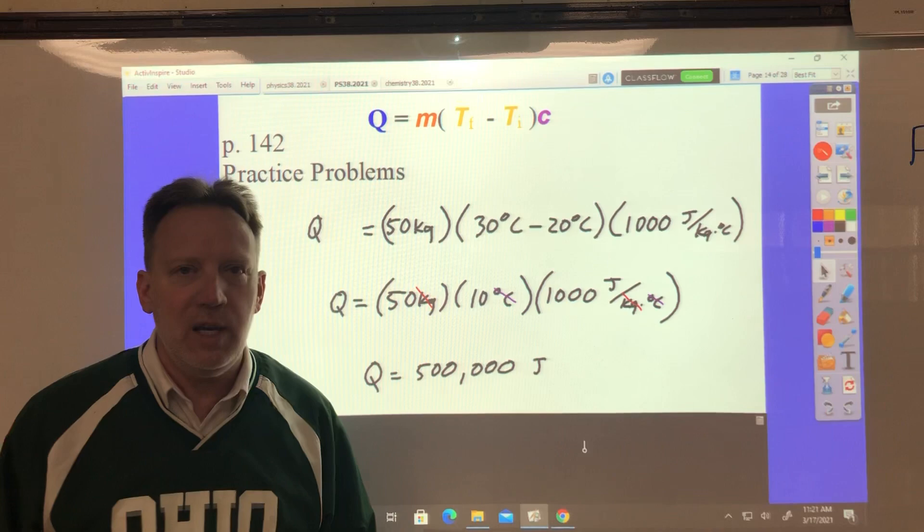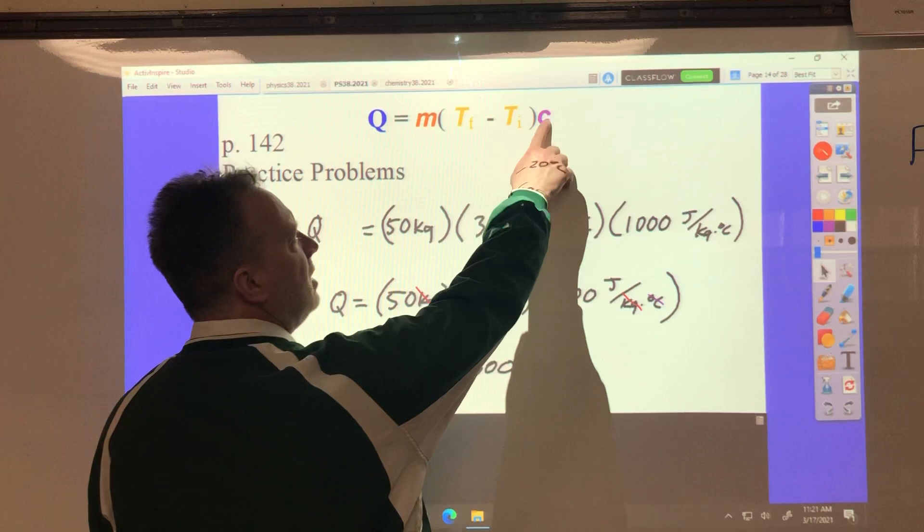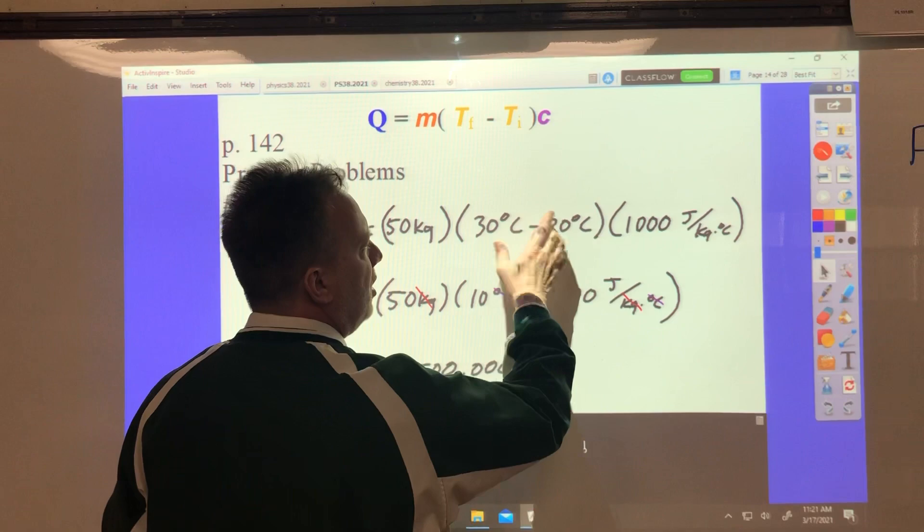You're almost half done. This is the easiest assignment you're going to get for all year, probably. Practice problem two. The temperature of a 2.0 kilogram block increases by 5 degrees Celsius when 2,000 joules of thermal energy are added to the block. What is the specific heat of the block?